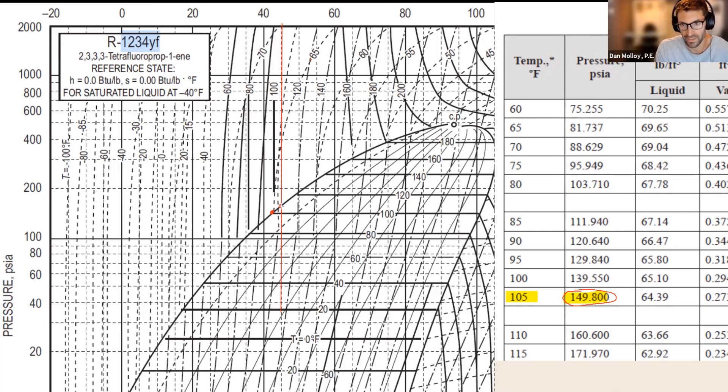But however far you have to go down to intersect the evaporation process line, so you can be confident that H3 and H4 are the same. So if you can find H3, you have H4. All right. Good question. I know that keeps people up at night, so I'm glad we were able to address it here.